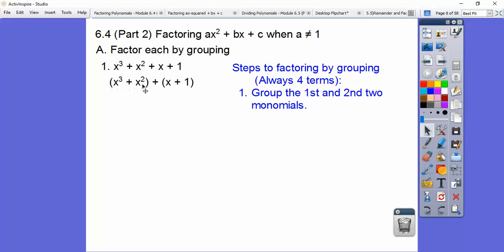So group the first two and the second two together. And then we GCF out. What can you pull out of these two guys? I can pull an x² out of these two guys. What can I pull out of these guys? Well, it's not nothing. We can always pull out one. So we GCF each group.